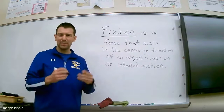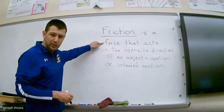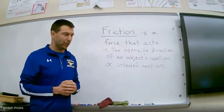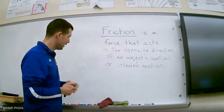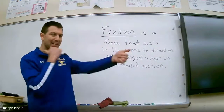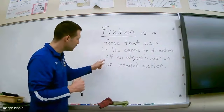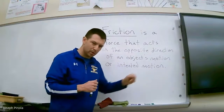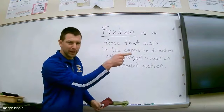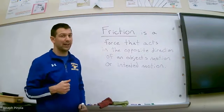What does that mean? Friction is a force, so it can be measured in newtons. It acts in the opposite direction, meaning it acts against something. If an object is moving one way, then friction is acting the other way on it.